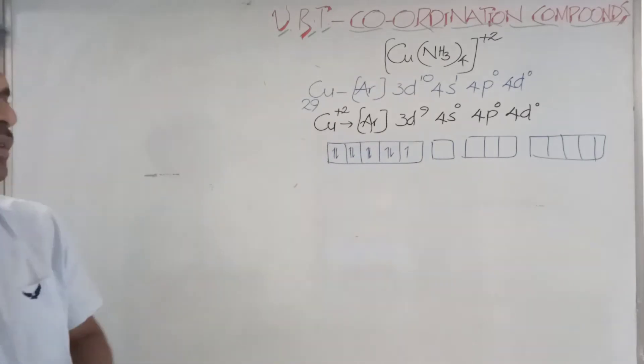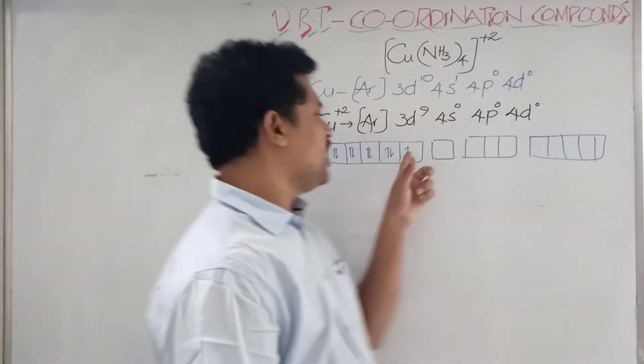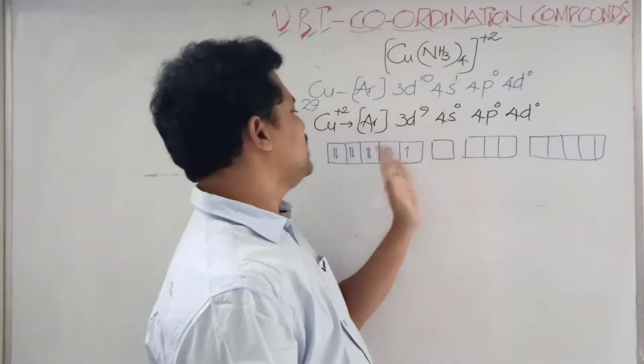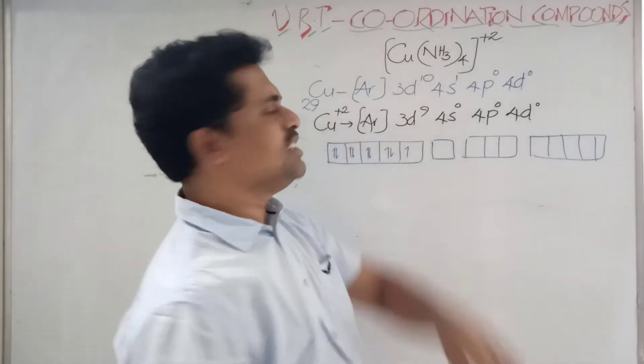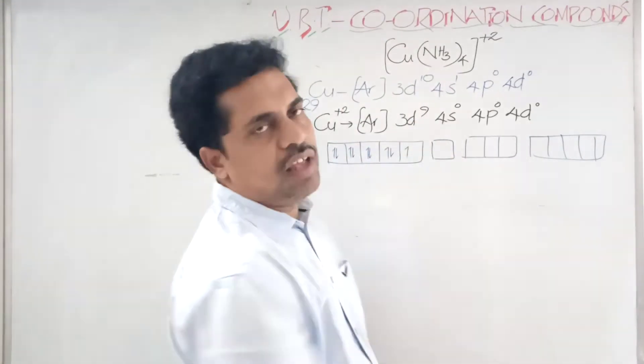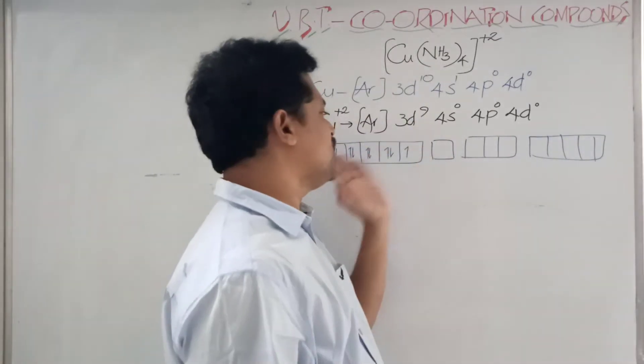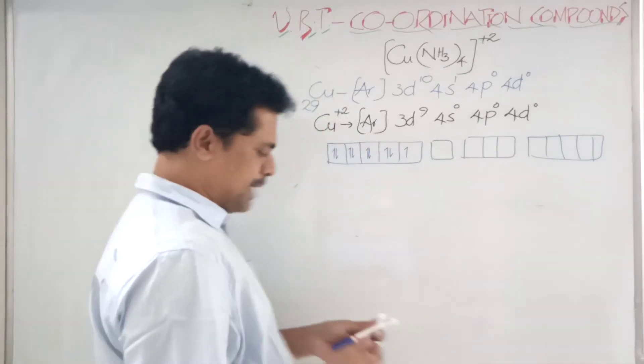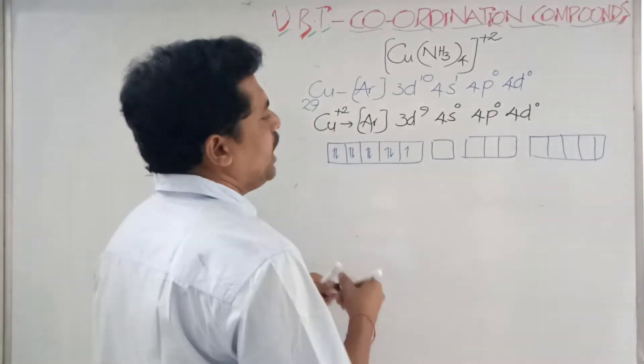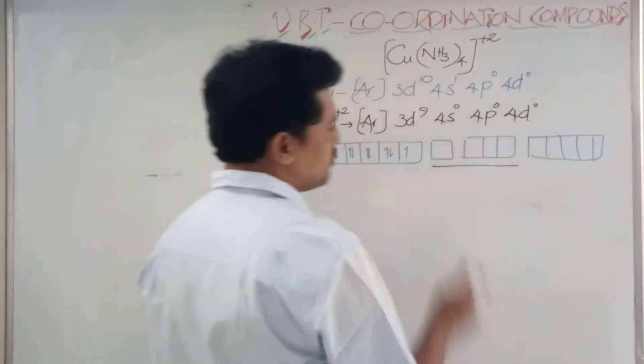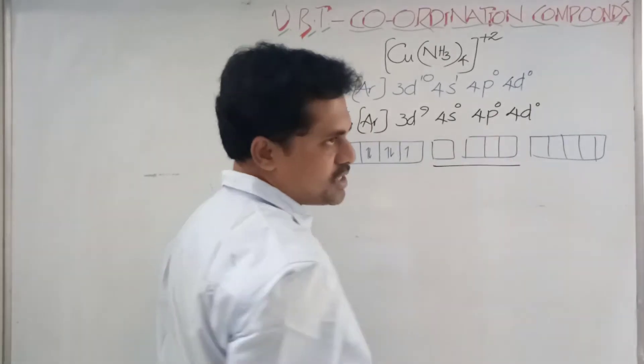Now you see one unpaired electron is present here, so this cannot be paired even though ammonia is a strong field ligand. It cannot be paired. When it cannot be paired, there is no use of taking this one.